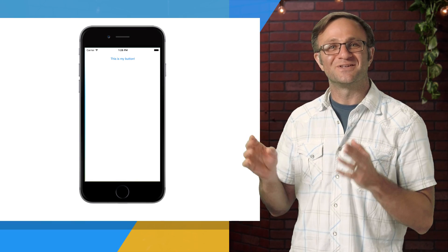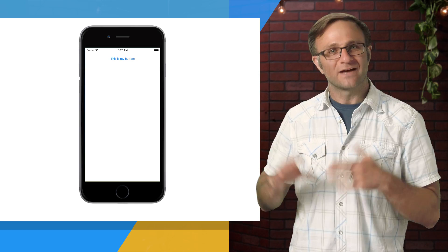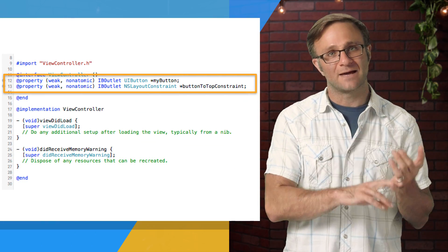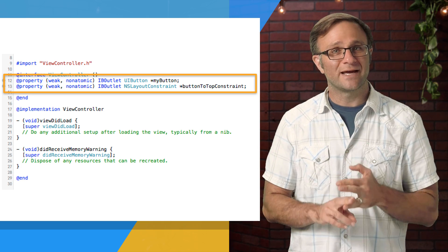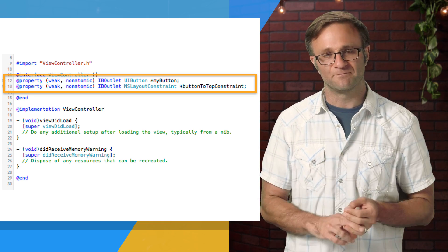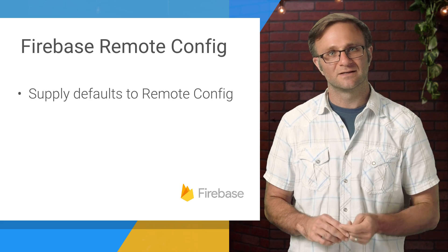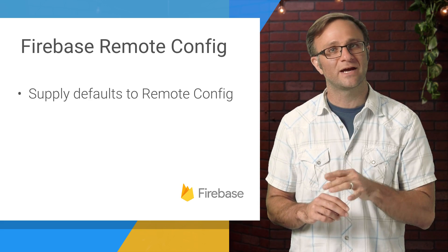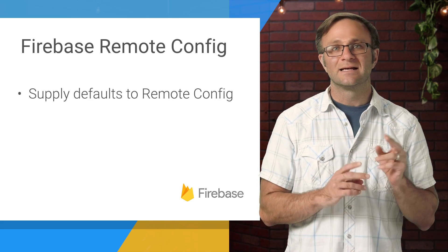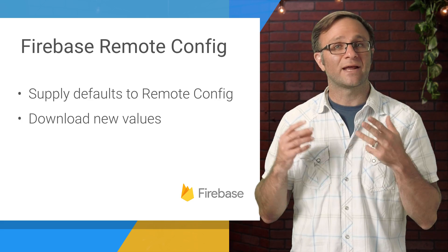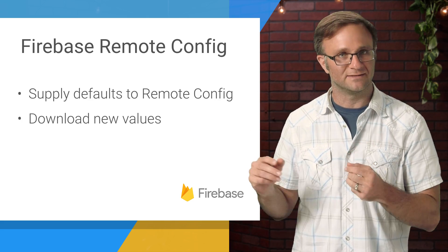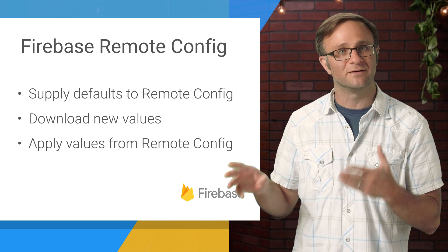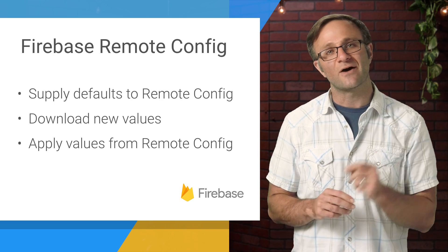Here's my app that I'm going to configure using Firebase Remote Config. I've got a button in my view controller — I've added both the button as an IB outlet, as well as the constraint that positions it near the top of the screen. In the course of this screencast, we're going to do three things: first, take our two values — the button text and the constraint constant — and give them to Remote Config as defaults. Second, we'll ask Remote Config to download any new values from the cloud. And third, we'll wire up our app to use these new values so we can change the look of our button from the Firebase console without touching our app.